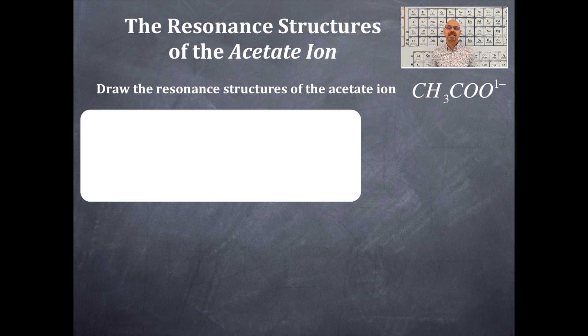You might see the acetate ion written as C2H3O2 with the negative one charge. Also, although chemists always prefer this one and the reason for that is because of this Lewis dot structure.